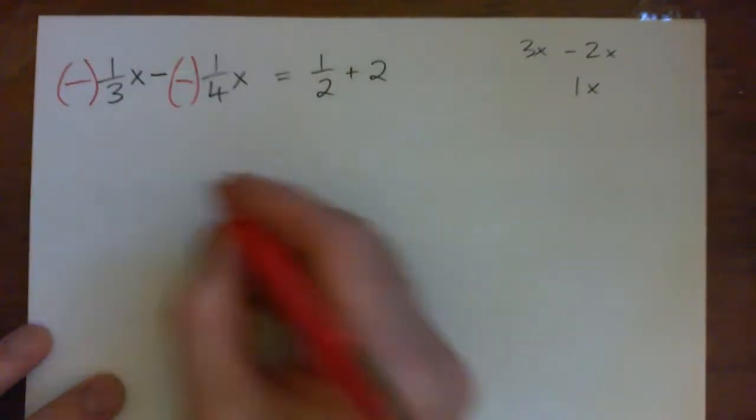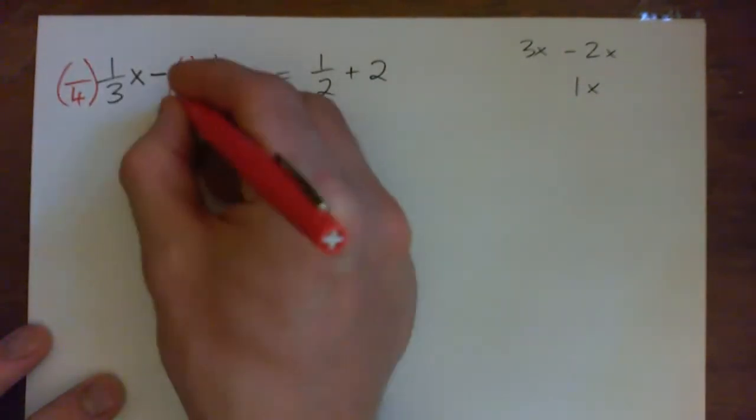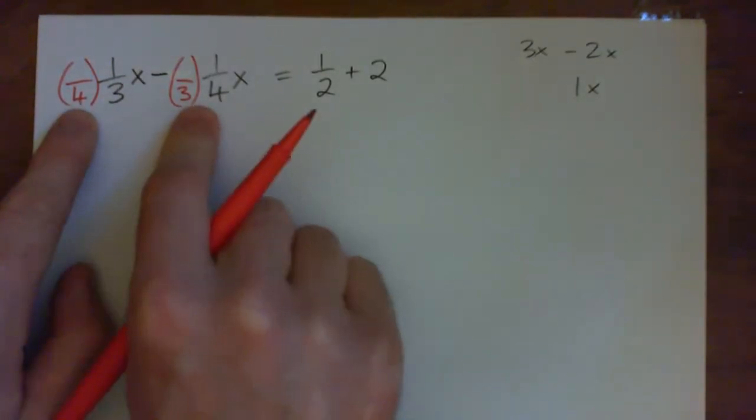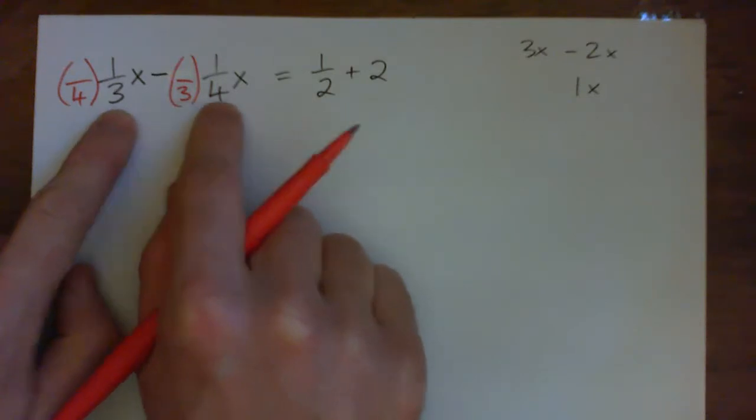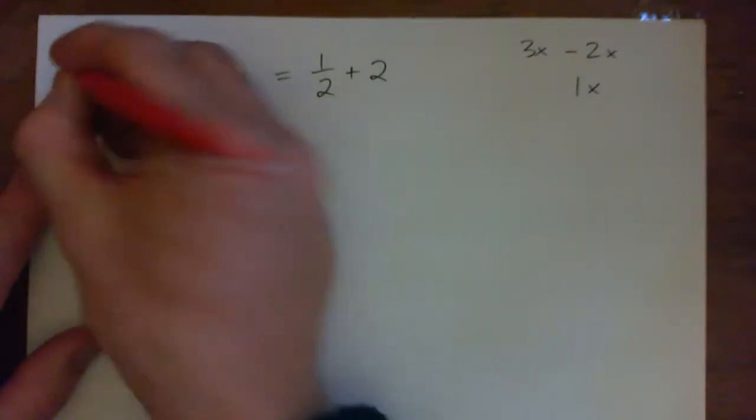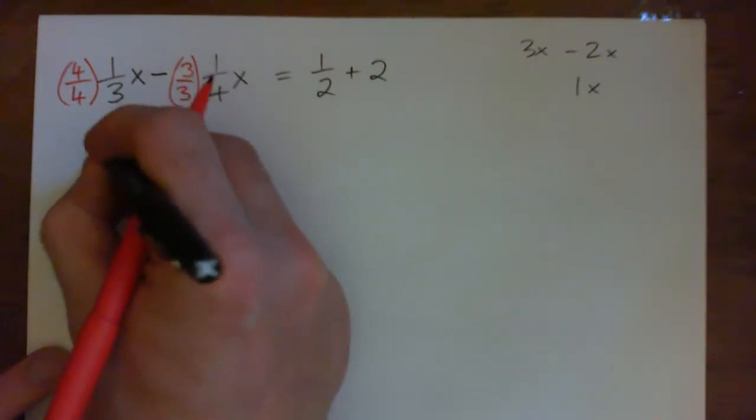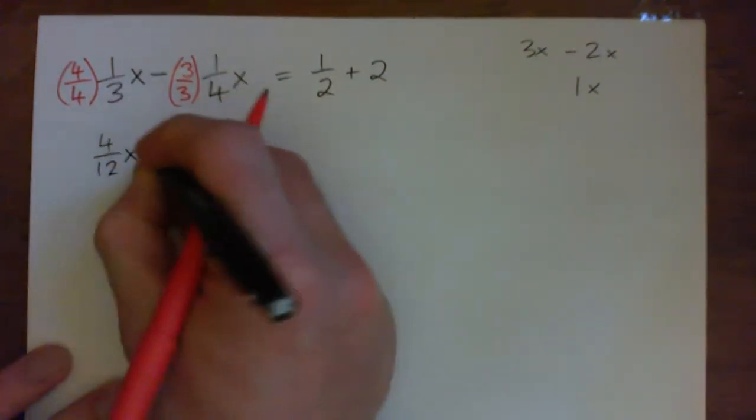If you multiply three by four and multiply four by three you get twelve. Make sure you have common factors on the bottoms. I'm going to multiply that by four over four and that by three over three, so that gives four twelfths x minus three twelfths x.